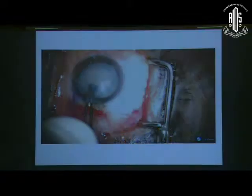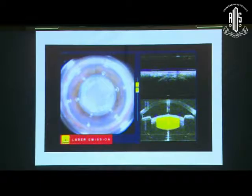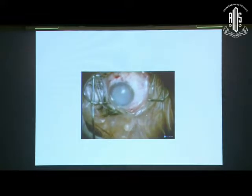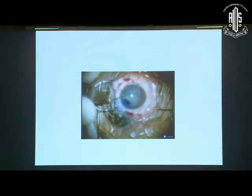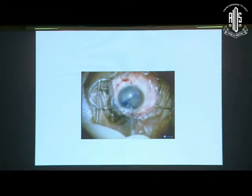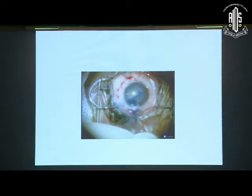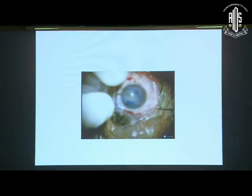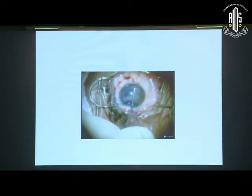Now, coming to what we can do with FLACS. This is an intumescent type where you would find there is suddenly a volcanic eruption, as if a real volcano has erupted. In all these white cataracts, I stain with trypan blue and always consider that tags are present. You should proceed in a very slow, phased-out manner. Here, you would see that I thought it was not fully done, and then completed the capsulorexis considering that the tags were there, and completed the procedure without any issue.